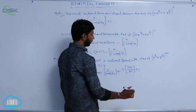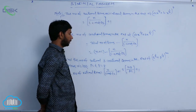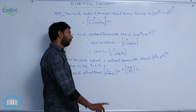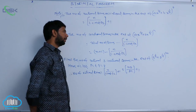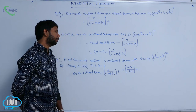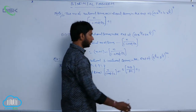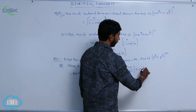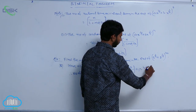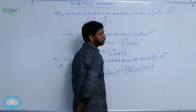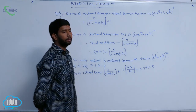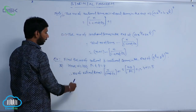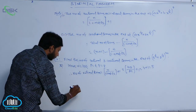LCM of 6 and 8 is 24. So 100 divided by 24 gives 4 point something, meaning the floor value is 4. Therefore 4 plus 1 is equal to 5 — the number of rational terms.